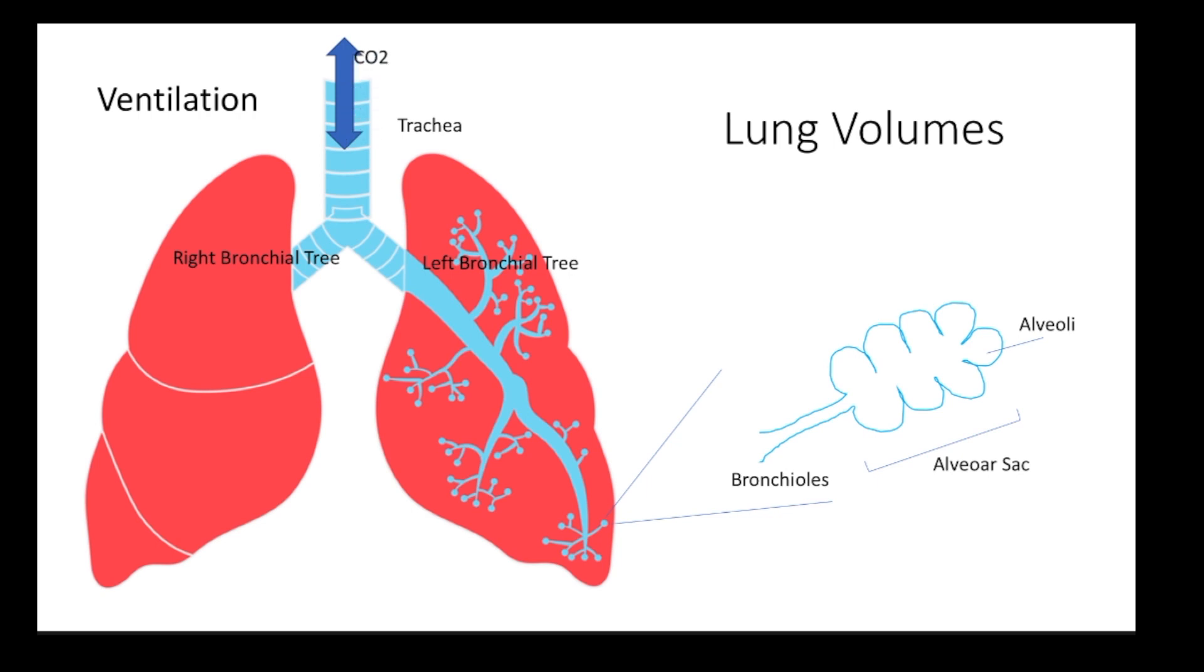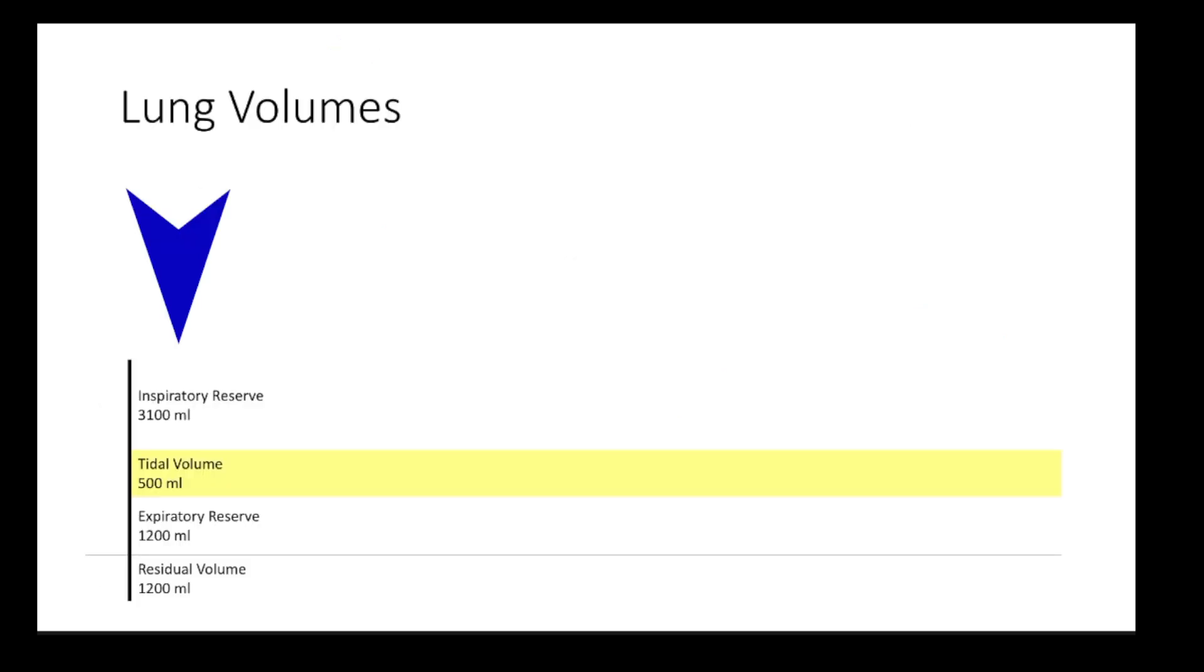Now we're going to start by looking at four lung volumes: inspiratory reserve volume, tidal volume, expiratory reserve volume, and residual volume. We're going to begin with tidal volume. Tidal volume is usually about 500 mils and it is the amount of air that we move in and out of our lungs during a normal breath, such as when you watch TV.